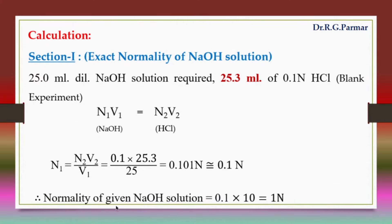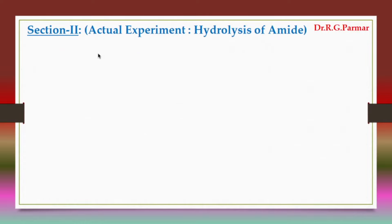So the normality of the given NaOH solution is equal to 0.1 × 10 = 1 normal. That is, the normality of the given NaOH solution is 1 normal. Now we proceed to the actual experiment, which is the hydrolysis of amide.